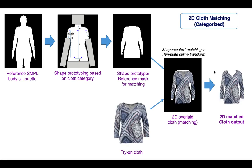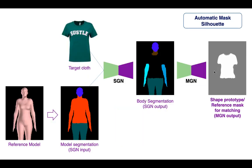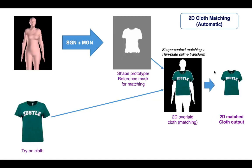For the automatic matching, we use the combination of SGN and MGN networks from the previous stage. We apply segmentation and mask generation networks according to the reference SMPL model input and generate the cloth masks for 2D matching. Then we apply the combination of shape context matching and thin plate spline transformation to get the 2D matched cloths, where the mask silhouette for 2D matching is now specific for each cloth input and automatically generated.